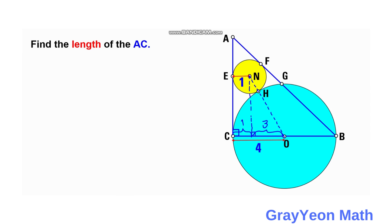Taking into consideration the radius of these two circles: for the yellow it is 1, so NH should be 1, and HO should be 4. Therefore, the total length of the resulting hypotenuse of this right triangle is 5.